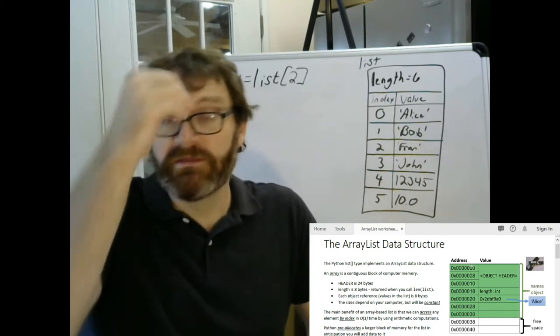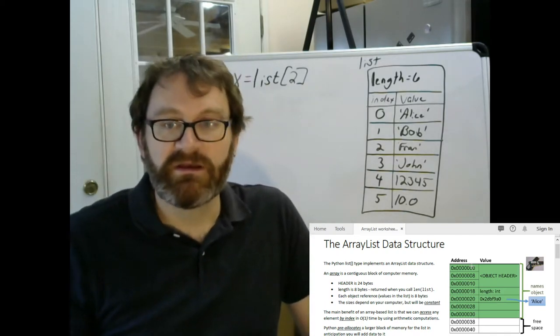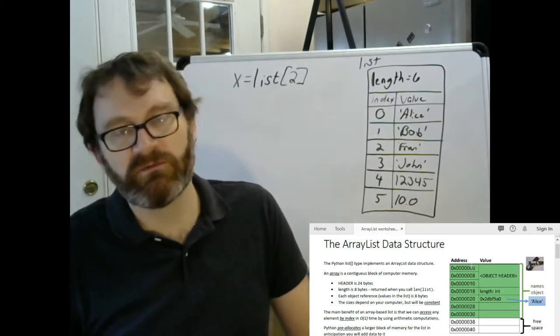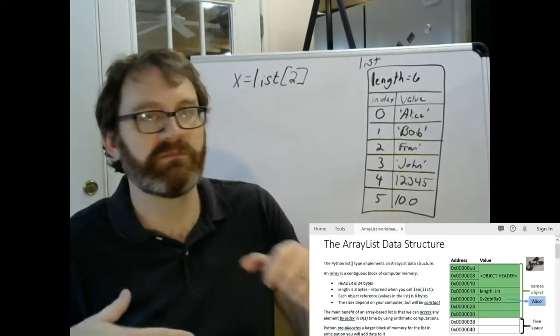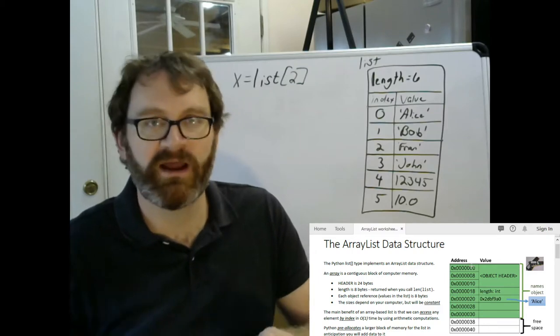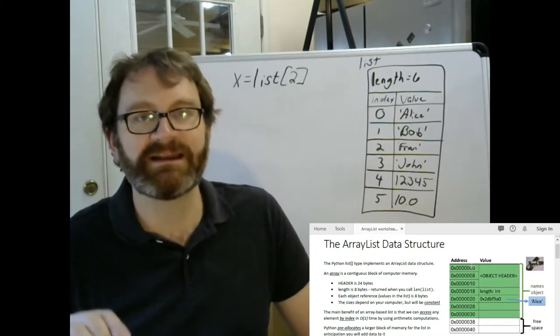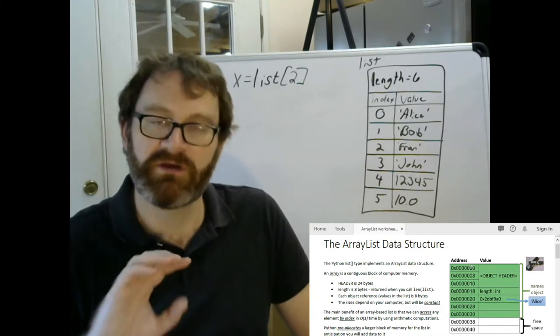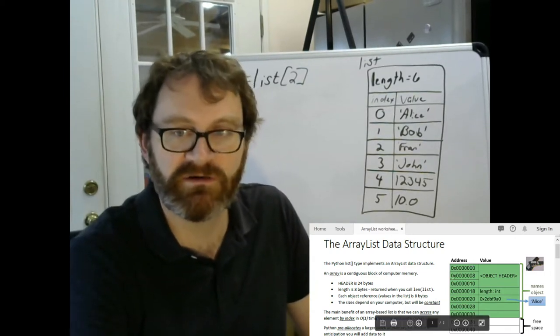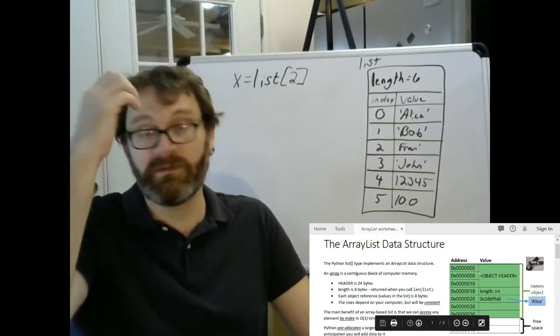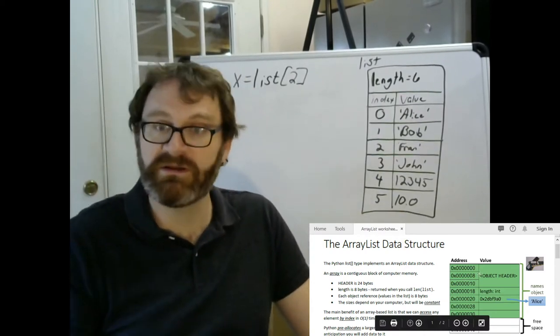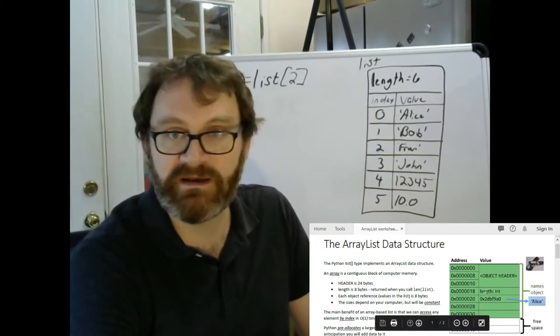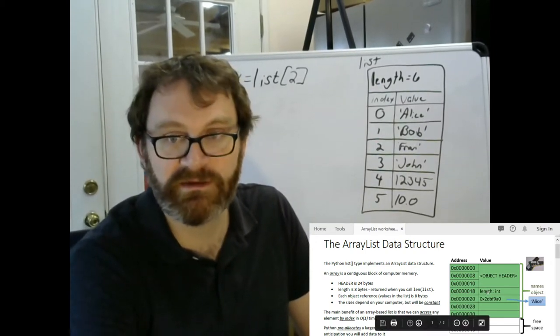So the beginning of the list is what we call the object header. You don't need to worry about what's in a Python object header. It's something Python uses for housekeeping and keeping track of stuff. But what's important is that it is a constant fixed size for your computer. So every list you ever make, this object header is going to be, say, 24 bytes. It may be a little different on your computer, but it's going to be the same. It's followed by the length stored as an integer, the length of the list.